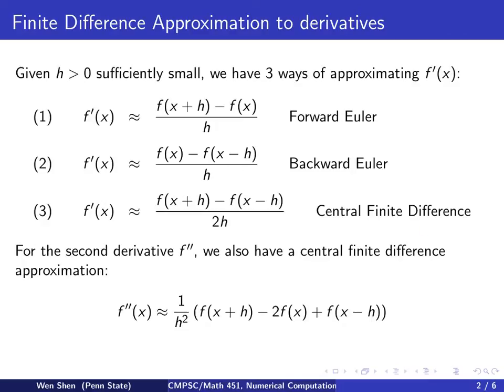There is also a way of approximating the second derivative — f double prime at x — and there is a central finite difference version of it. It is evaluated as: f at x plus h, minus 2f of x, plus f at x minus h, and the whole expression is divided by h squared.